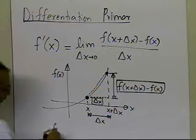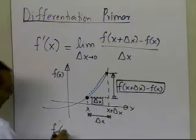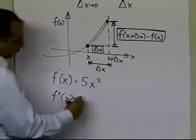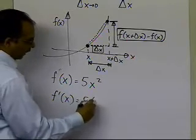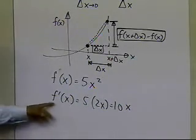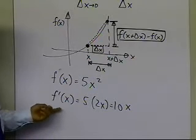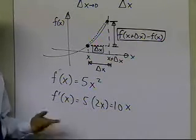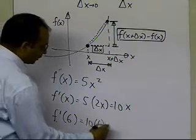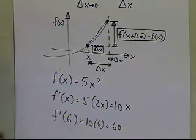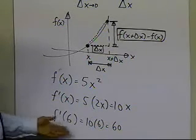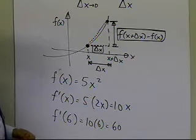Let's take an example. Suppose you have the function f of x equal to 5x squared. From your differential calculus class, you already know f prime of x is 5 times the derivative of x squared, which is 2x, giving you 10x. And if you want to calculate the value of the derivative at any point x, you can plug in the value of x. For example, at x equals 6, you get 10 times 6, which is 60.